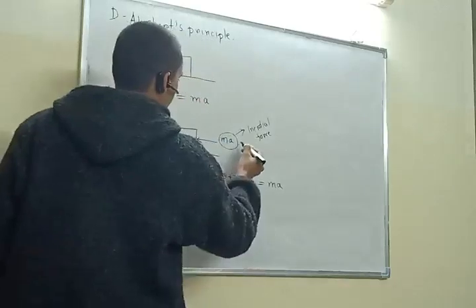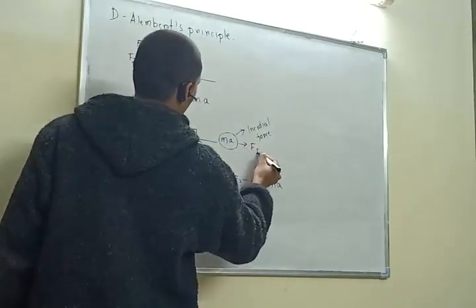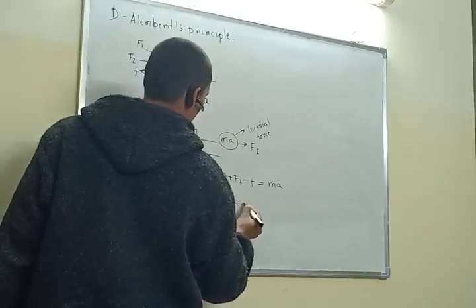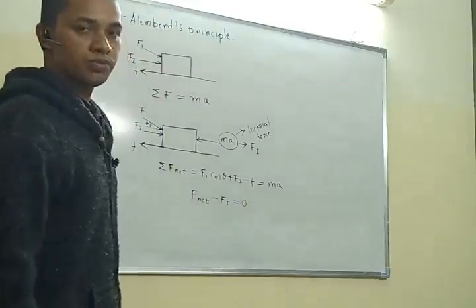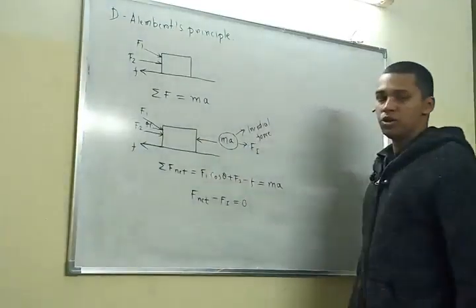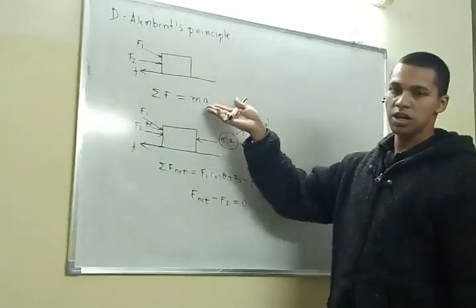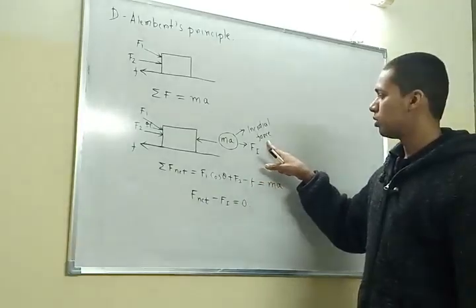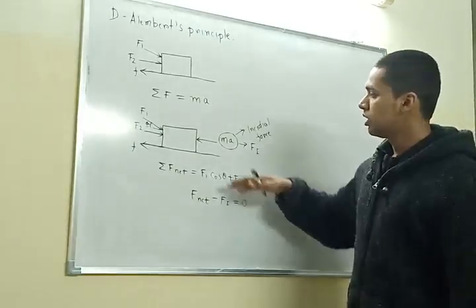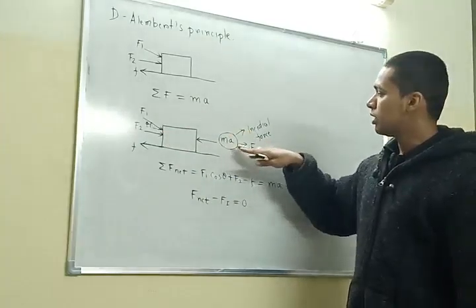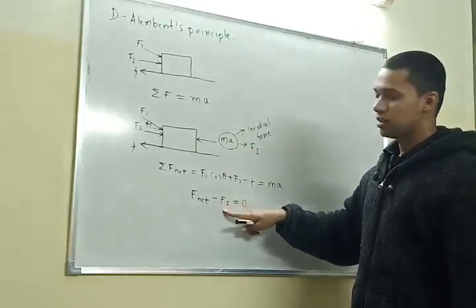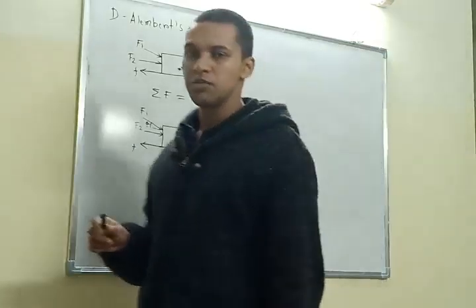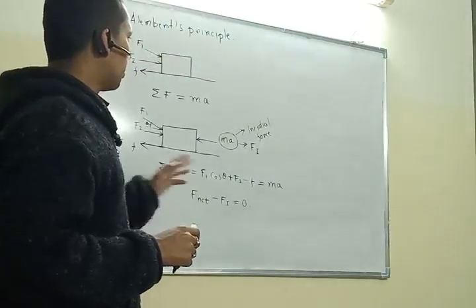I am putting the same imaginary mass times acceleration in this direction, and that is what I am calling inertial force. Because of these two, the net force will be zero. So I can write: F_net minus F_I is equal to zero. This is just the same as Newton's law, but what we have got is the concept of inertial force and dynamic equilibrium. The body will definitely be moving, but because of the inertial force we can write F_net minus F_I equals zero — zero means some kind of equilibrium. So we say the body is in dynamic equilibrium. That is how D'Alembert's principle differs from Newton's law.